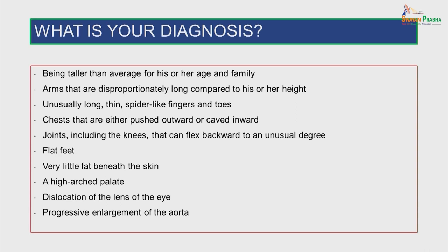This is a clinical scenario which will be discussed at the end: being taller than average for his or her age and family; arms that are disproportionately long compared to height; unusually long, thin, spider-like fingers and toes; chests that are either pushed outward or caved inward; joints including the knees that can flex backward to an unusual degree; flat feet; very little fat beneath the skin; a high arched palate; dislocation of the lens of the eye; and progressive enlargement of the aorta.